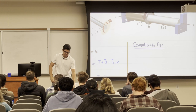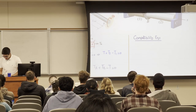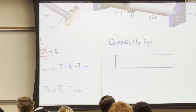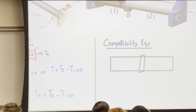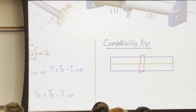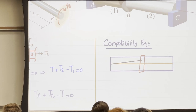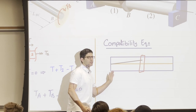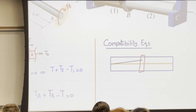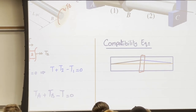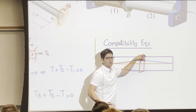Looking at this from an elevation view with the plate in the middle: when torque is applied, one side twists one way and the other side twists back to zero at its fixed end. The same happens on the other side — both start at the plate with the same rotation magnitude and return to zero at their respective fixed ends.